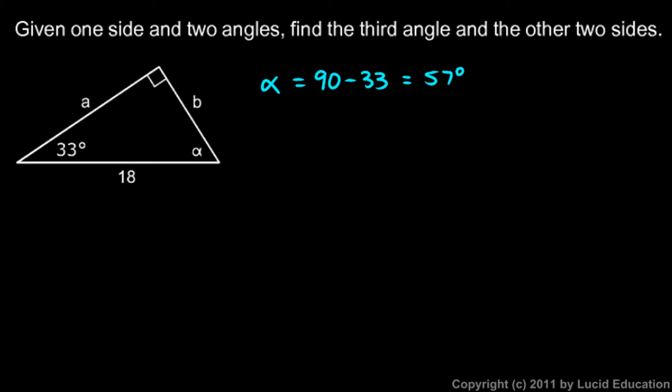Now we need to find the other two sides. Let's look at this 33 degree angle and look at side B. That side is opposite my 33 degree angle and this is the hypotenuse. So I know that the sine of 33 degrees has to be the opposite over the hypotenuse, that's B over 18. Here's a little equation with one unknown, B. I can rearrange this to solve for B. B equals 18 times the sine of 33 degrees, and that comes out to 9.8.